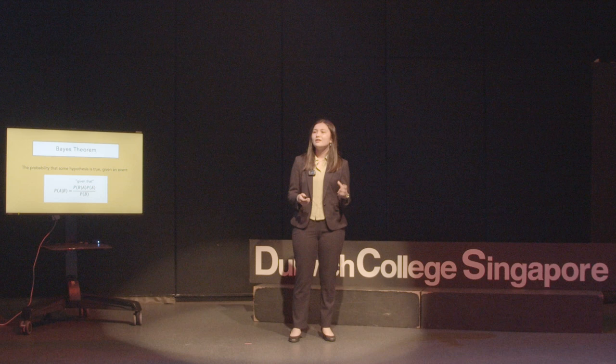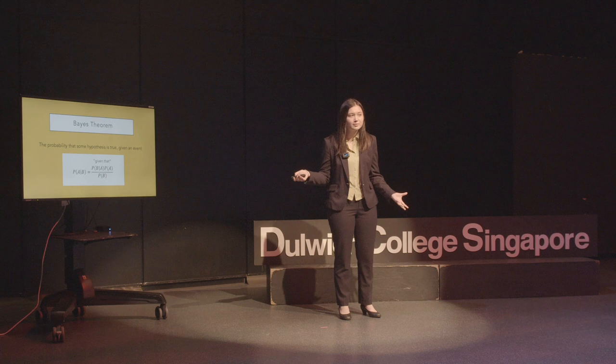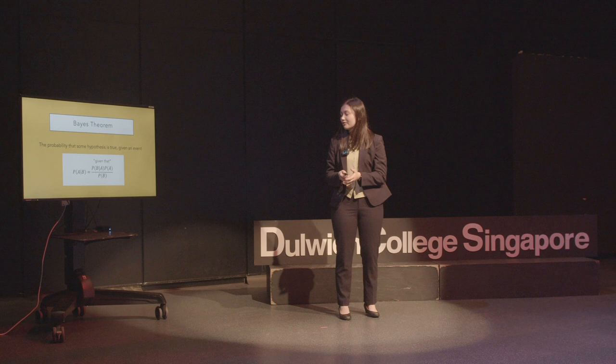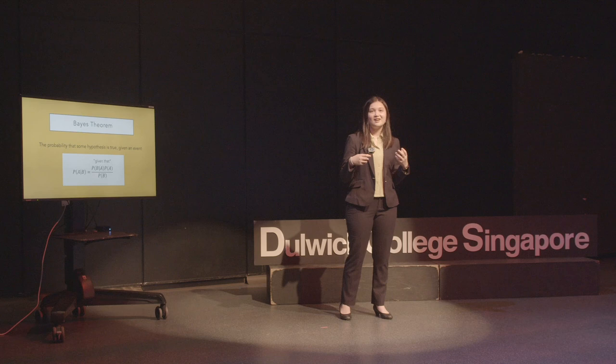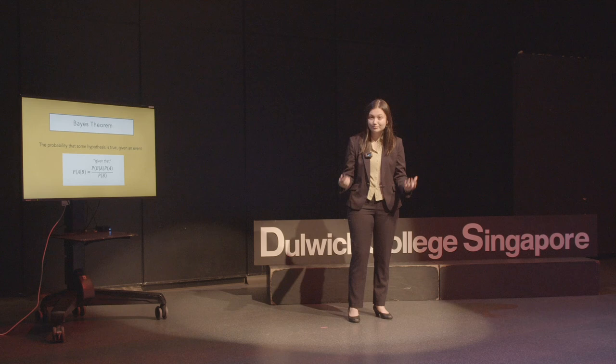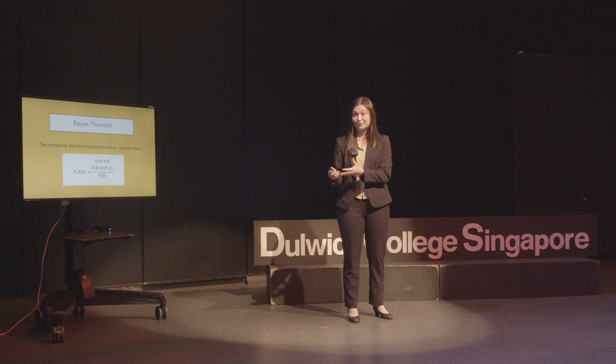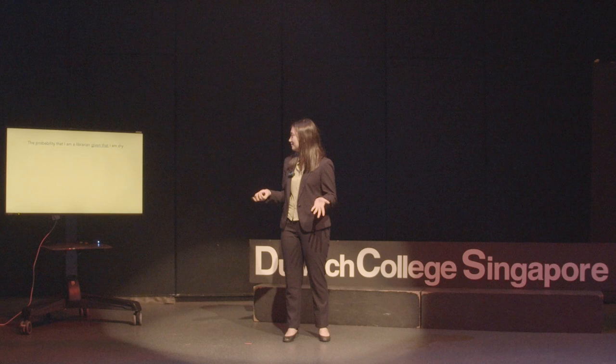Bayes theorem essentially describes the probability that a specific hypothesis is true given that an event happens. If we apply this to the situation I just described: P represents the probability of something happening, and the vertical line represents 'given that.' So reading it out according to our example: the probability that I am a librarian given that I am shy equals the probability that I'm shy given that I'm a librarian, times the probability that I'm a librarian, all over the probability that I'm shy.